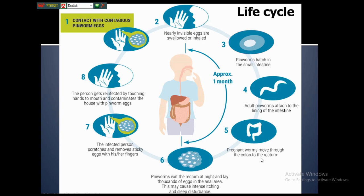Very peculiarly, the female does not lay eggs inside the colon. When gravid, the female migrates out of the colon to the rectum and perianal region, exiting the rectum at night to lay thousands of eggs in the anal area. These eggs stick to the perianal region and cause intense itching and sleep disturbance — the most pronounced symptoms of enterobiasis. The infected person scratches, and eggs stick to the fingers and nails.